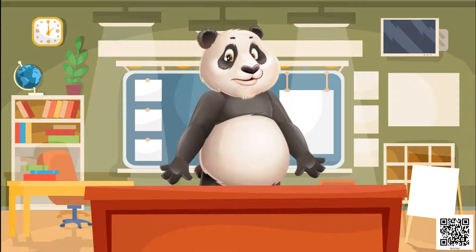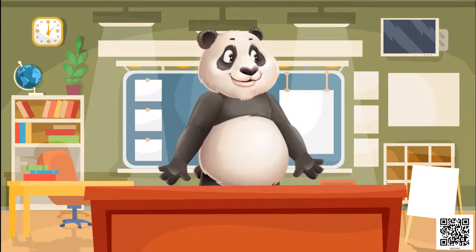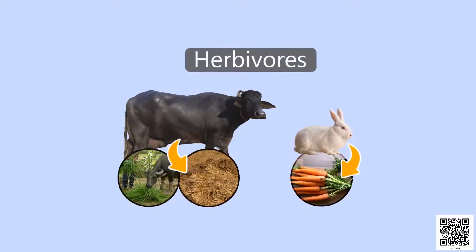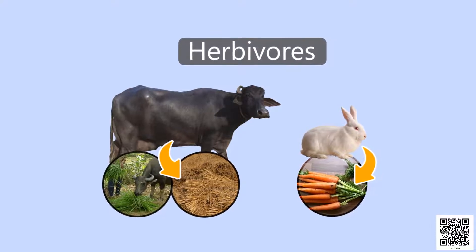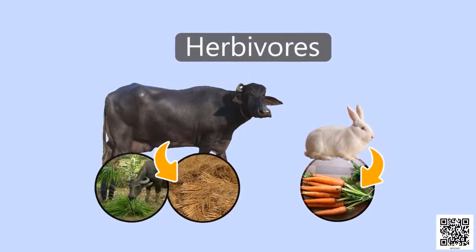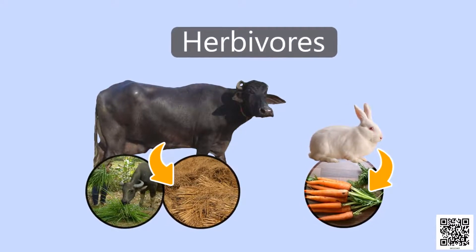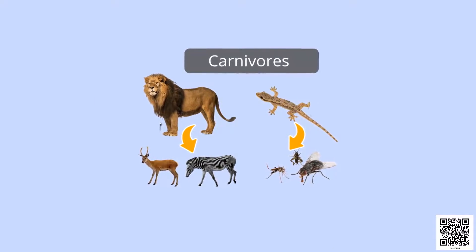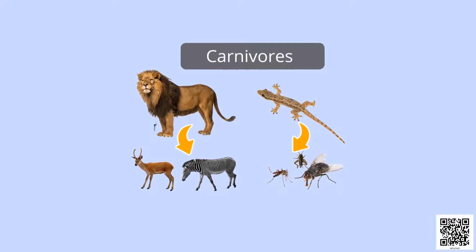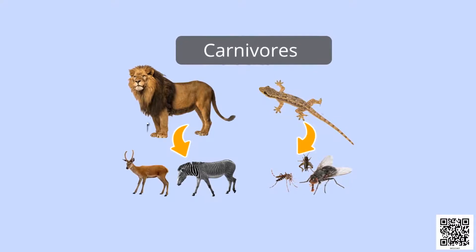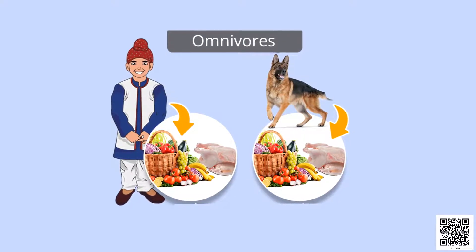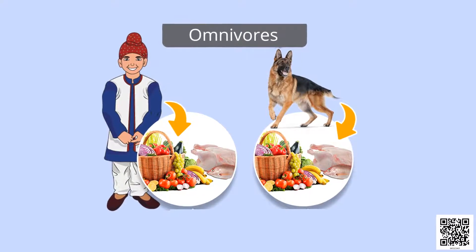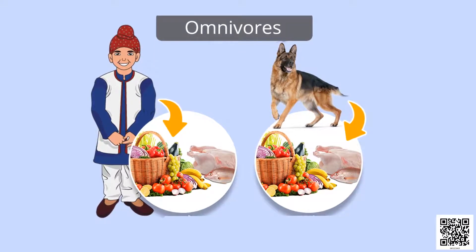Those animals which eat plants and plant products are called herbivores. As you can see in the picture, the rabbit is eating carrots and the cow is grazing grass. So they are called herbivores. If we talk about carnivores, these are those animals which eat other animals. For example, lion and lizard. Lion eats deer, zebras, and other herbivores, whereas lizards eat insects. The third category is omnivores. Omnivores are those animals which eat both plants as well as animals, for example humans and dogs.